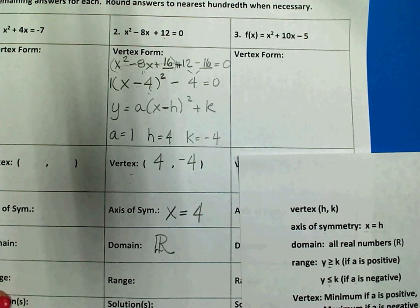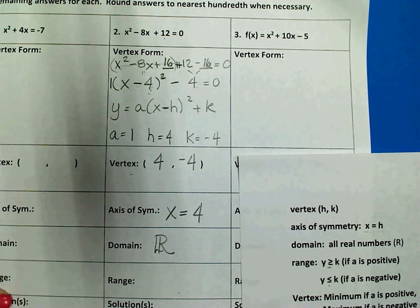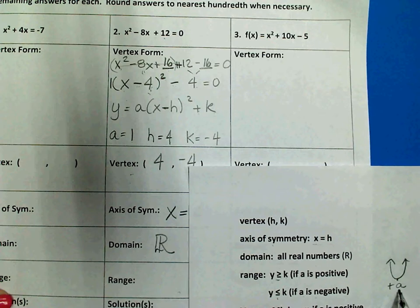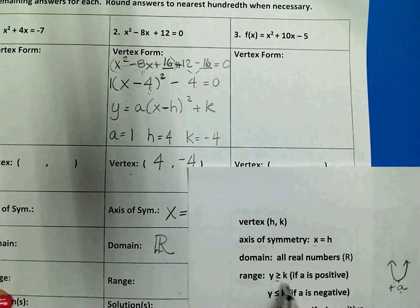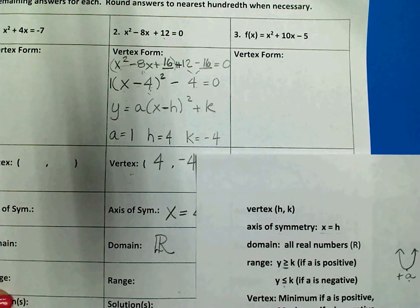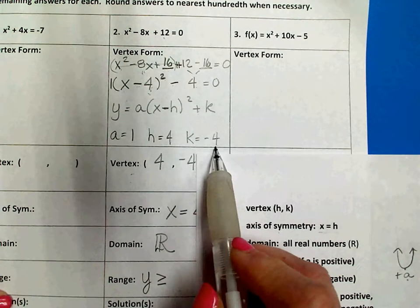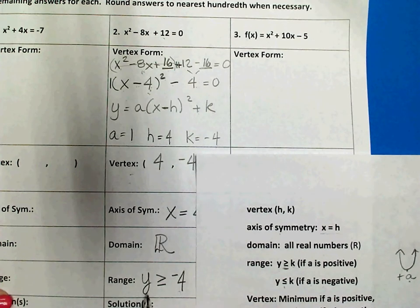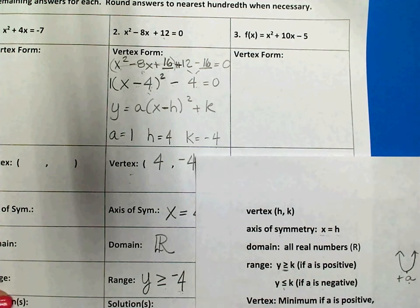Your range, again, you have to decide whether your parabola is opening upward or downward. And that's based on your a value. If a is positive, your parabola opens upward, like this. And that means that your y values are going up. So, you're going to use the greater than symbol for your range. y is greater than or equal to whatever your value of k is. So, in this case, negative 4. And you must include the y with the inequality symbol. You can't just write negative 4 on the range.